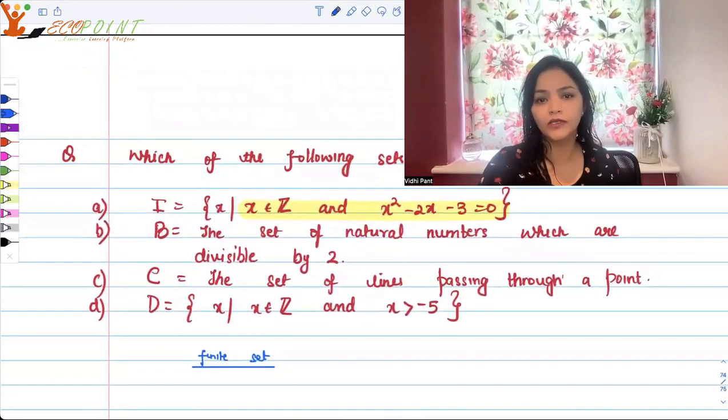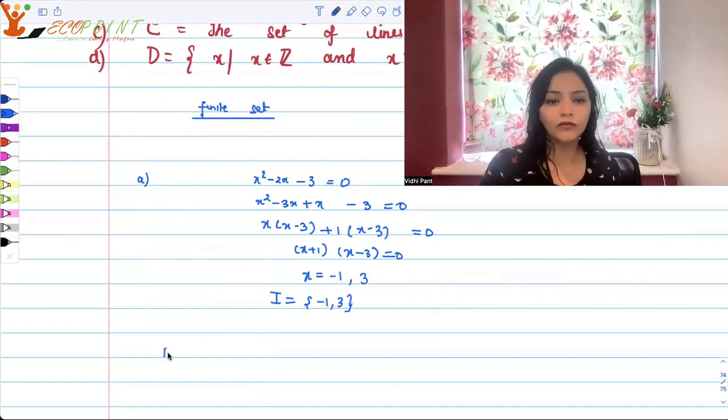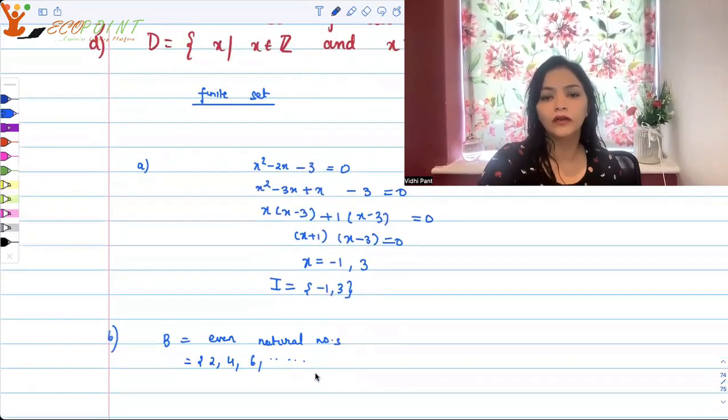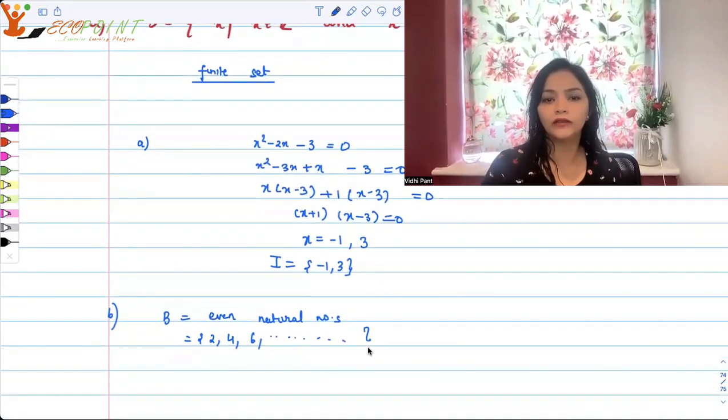So B is the set of natural numbers which are divisible by 2. So the set of natural numbers that are divisible by 2 are all even numbers, even natural numbers. Do you think the count ever ends? The count never ends. You have infinite natural numbers. Hence, you have infinitely many even natural numbers. So this set starts with 2, 4, 6, so on and so forth. It keeps on going. So this is infinite. This is finite.